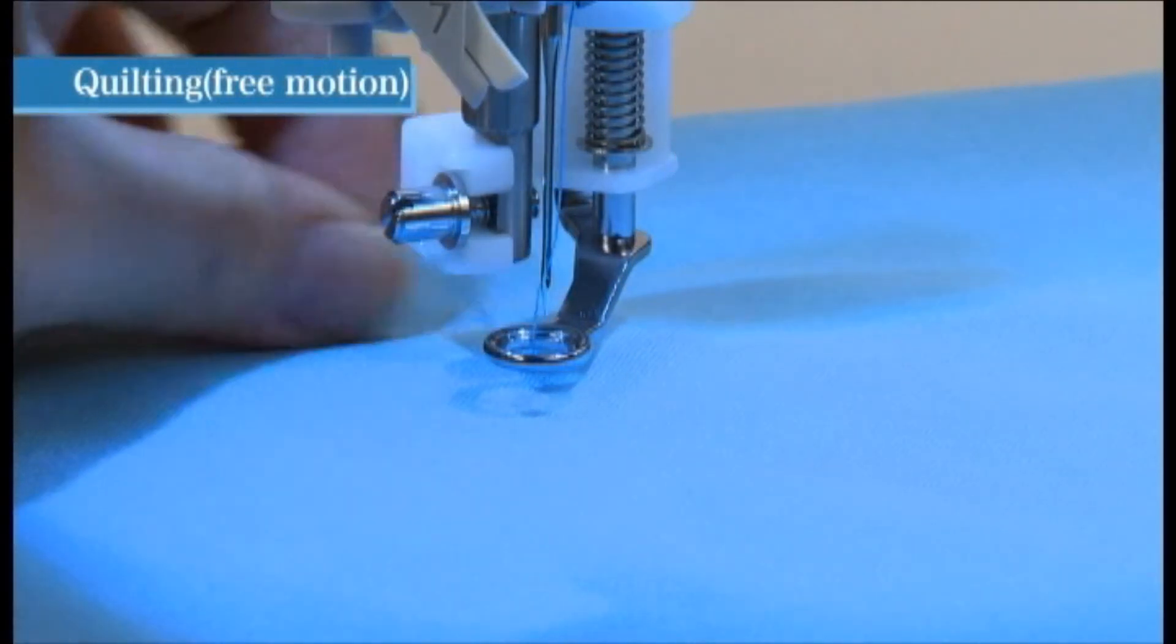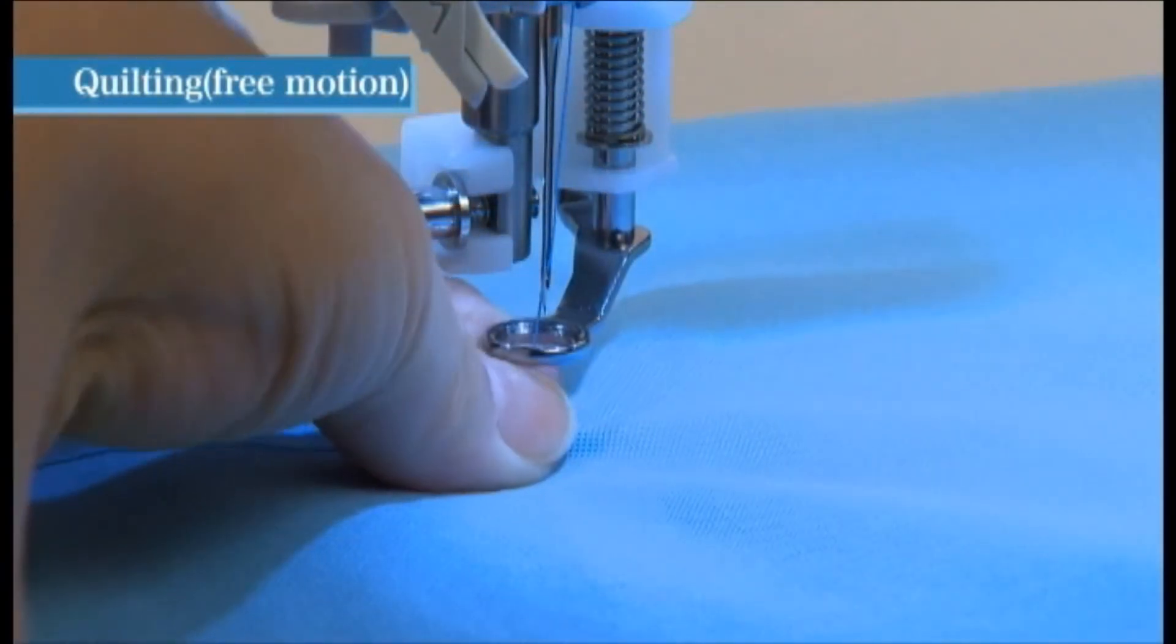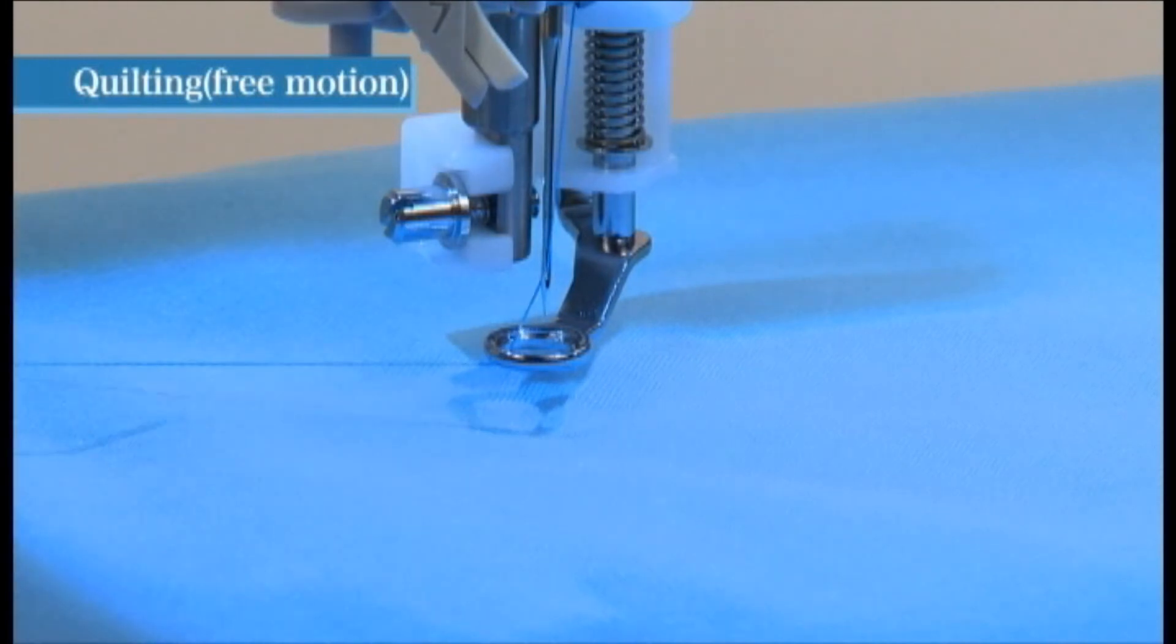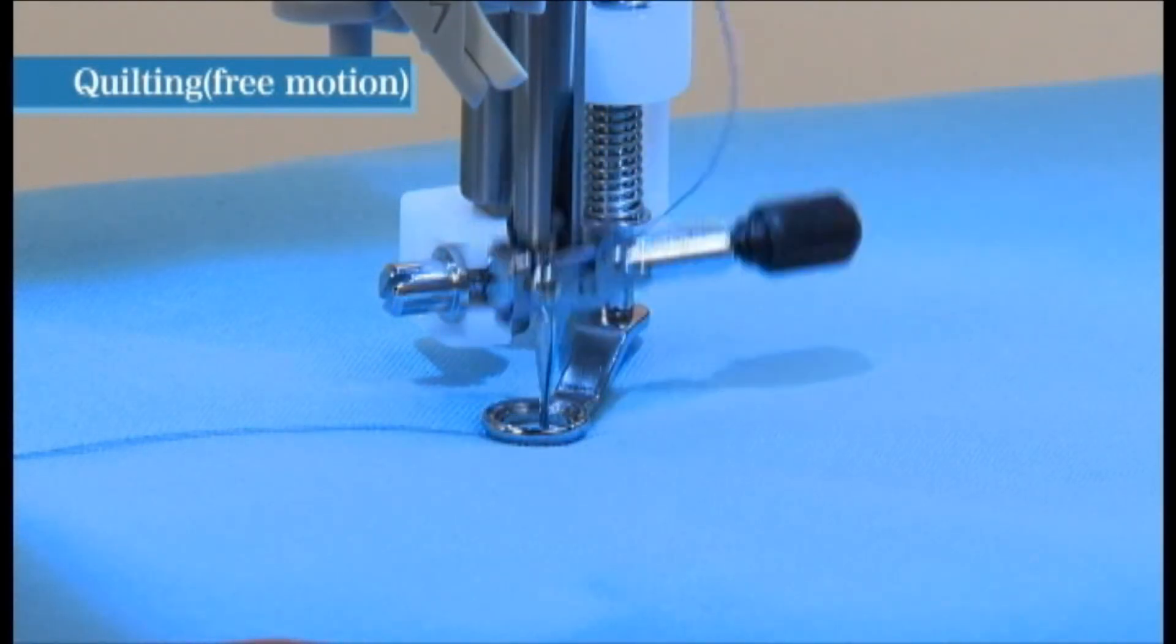To form neat stitches on the wrong side of the fabric, move needle up and down one time to pull up the bobbin thread onto the top of fabric and lower the presser foot. Then, sew two to three lock stitches while holding both the needle and bobbin threads together.